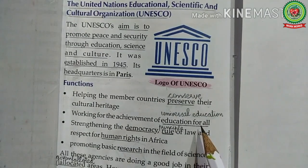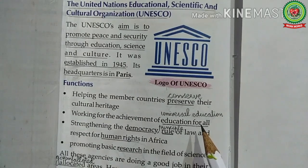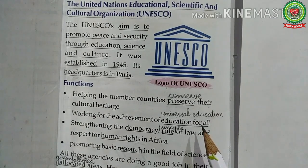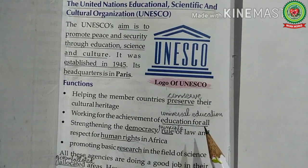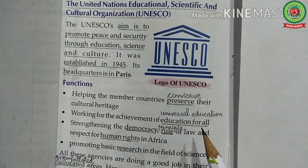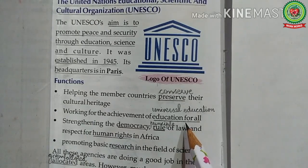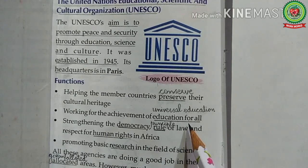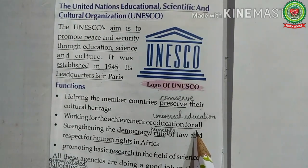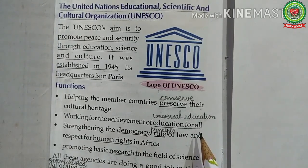UNESCO focuses on increasing equity, improving quality, and ensuring that education develops knowledge and skills in areas such as sustainable development, human rights, etc. UNESCO works with governments and a wide range of partners to make education systems more effective through policy change. It also coordinates the Education for All movement, tracks education trends, and raises the profile of educational needs on global development agendas.